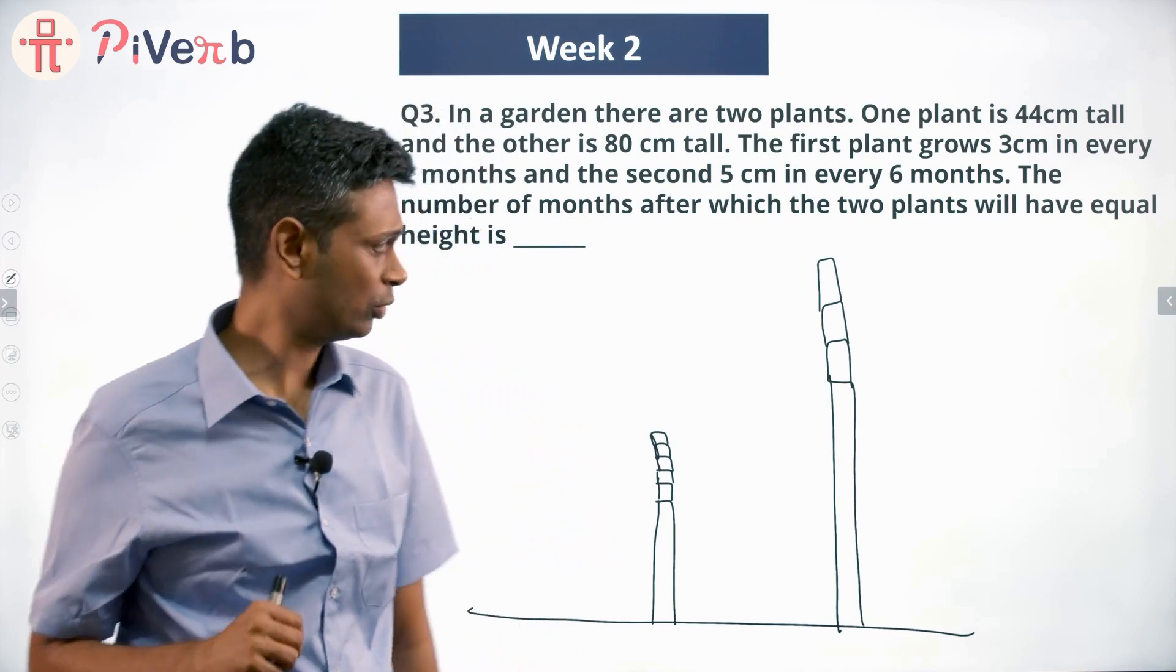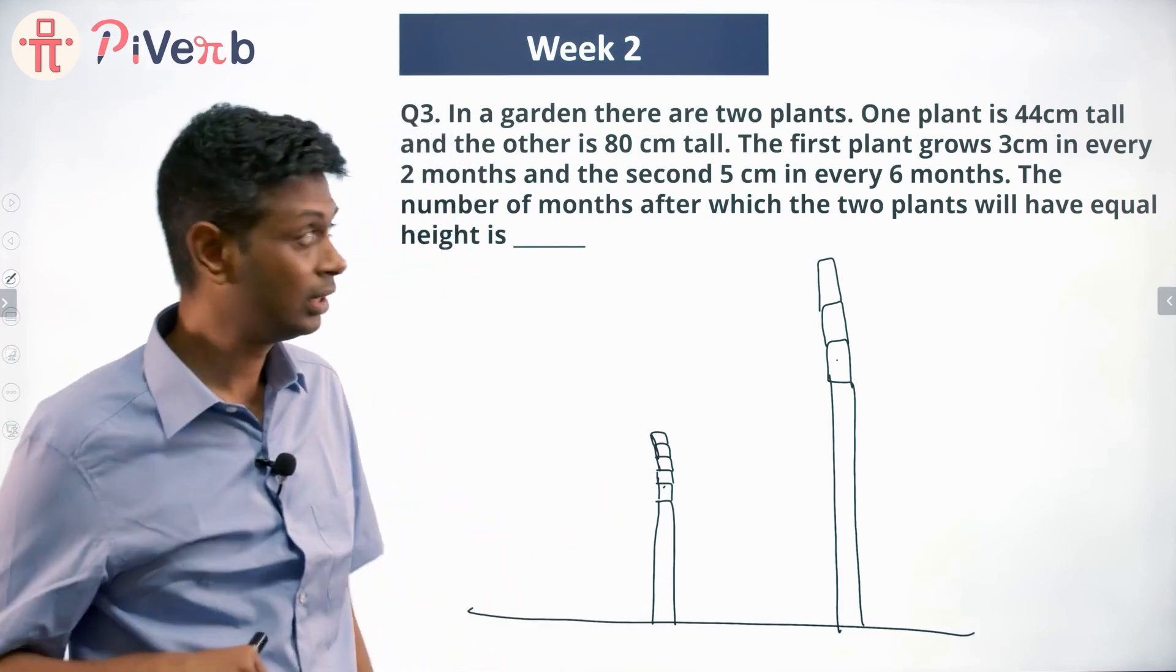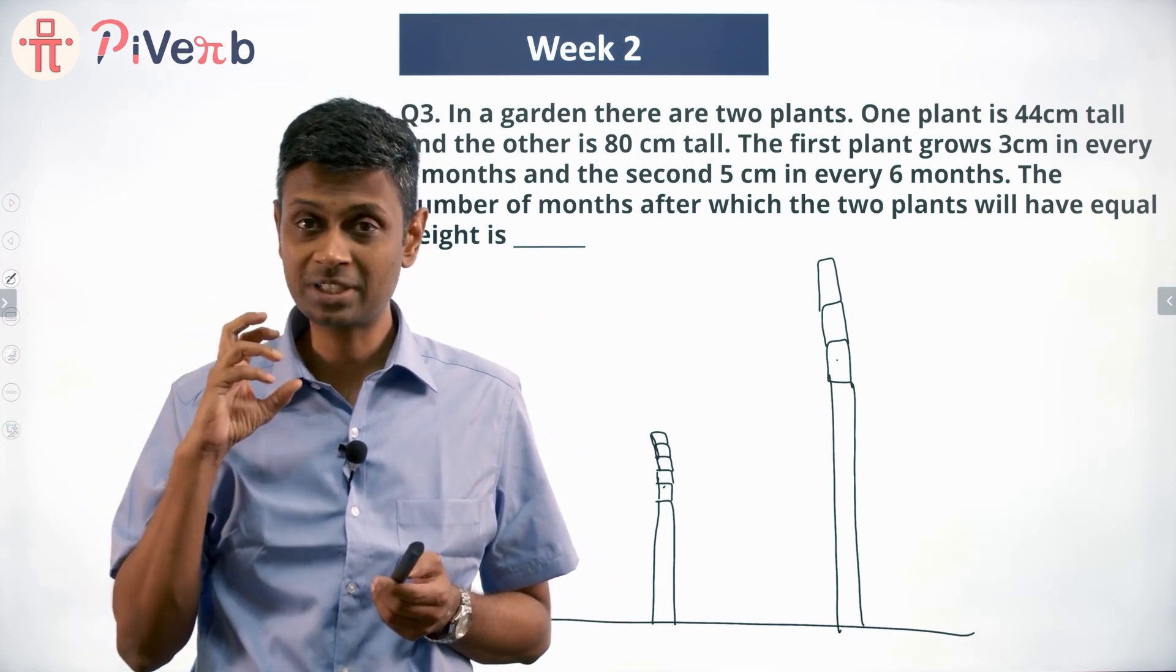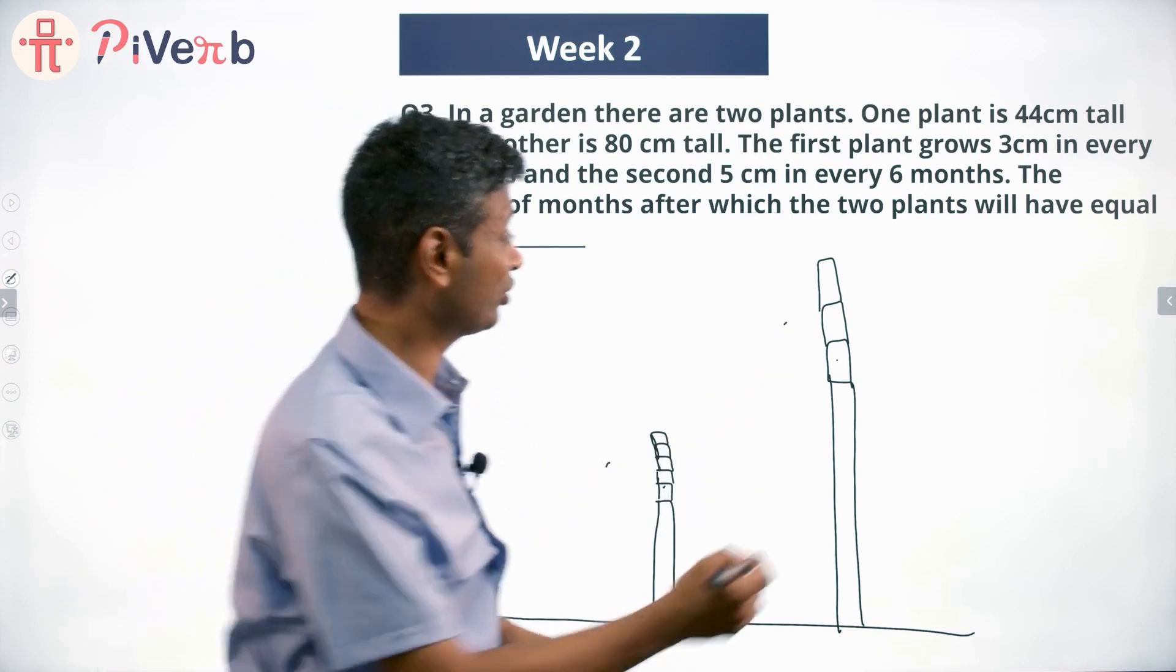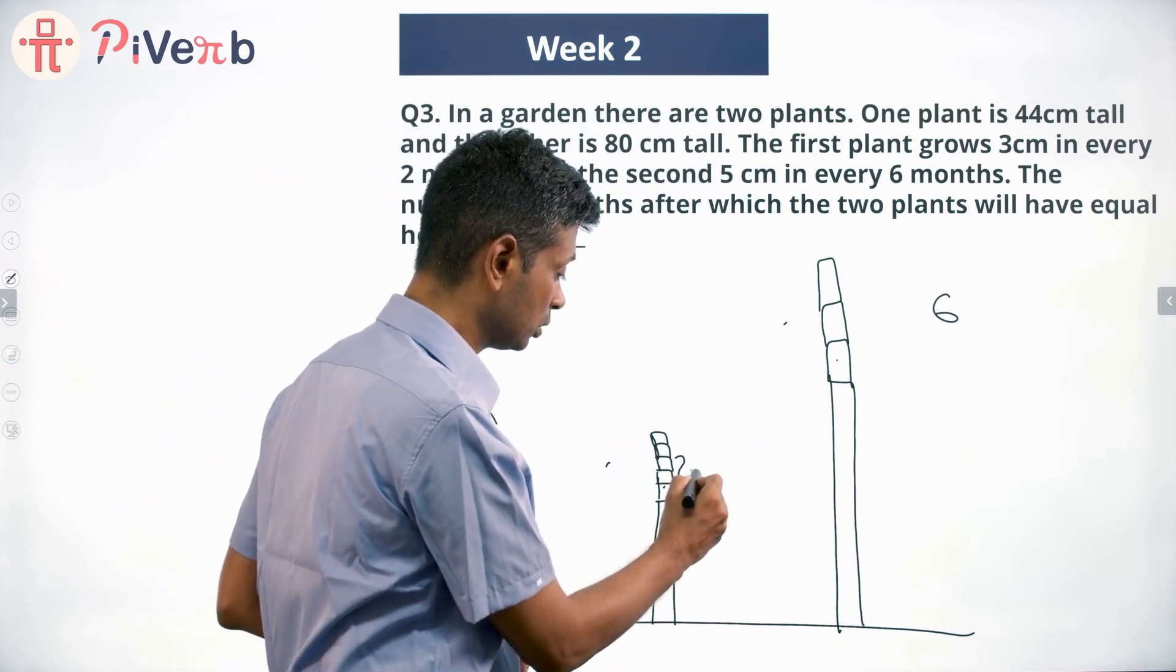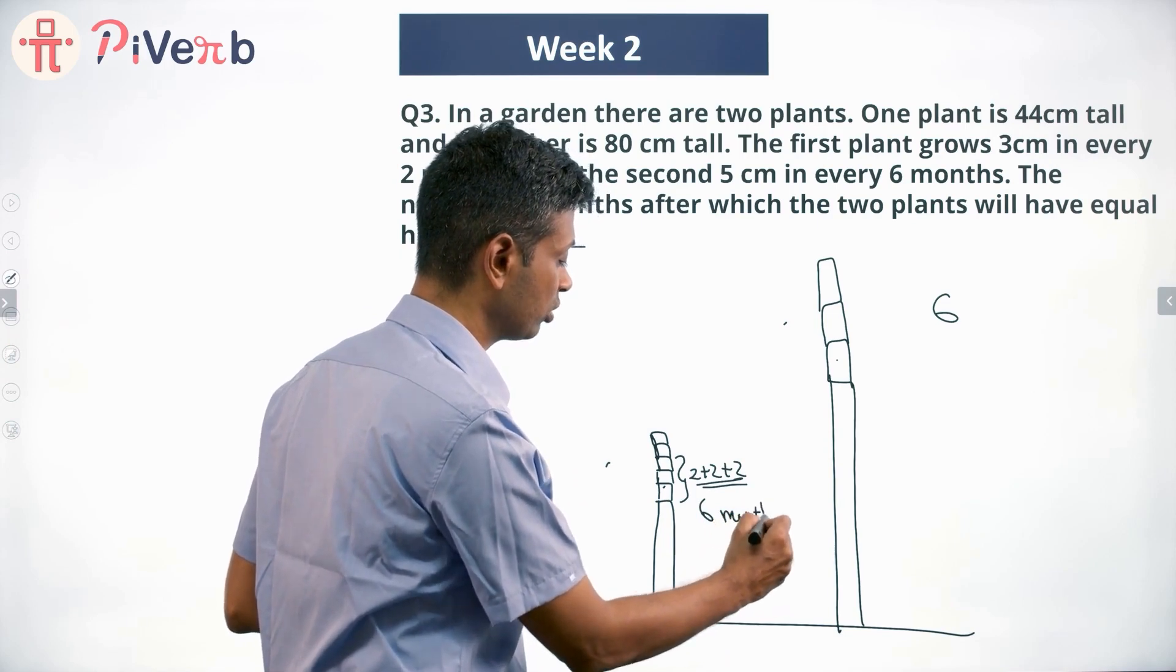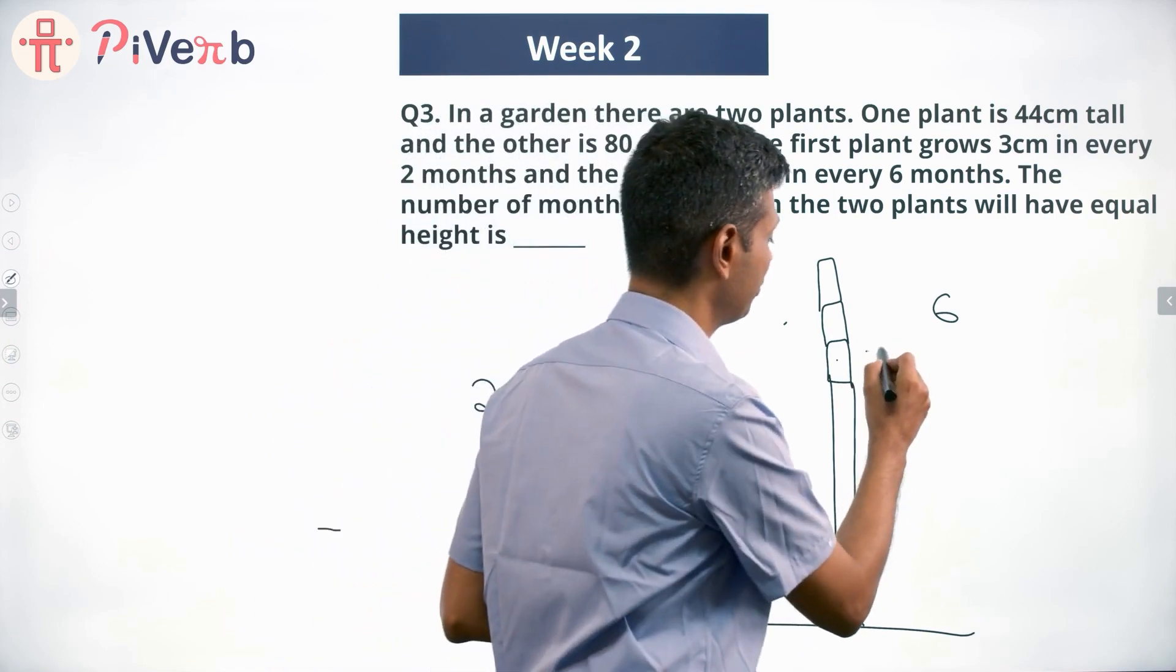This is 5, this is 2. This is 3 centimeters but it's 3 centimeters every 2 months, that is 5 centimeters every 6 months. First thing to do, I'm comparing these two. I'm going to think about the same set of time. This is every 6 months, this is every 2 months, so if I have 3 sets of 2 months, that will account for 6 months. So in 6 months, this grows 9 centimeters whereas this grows only 5 centimeters.